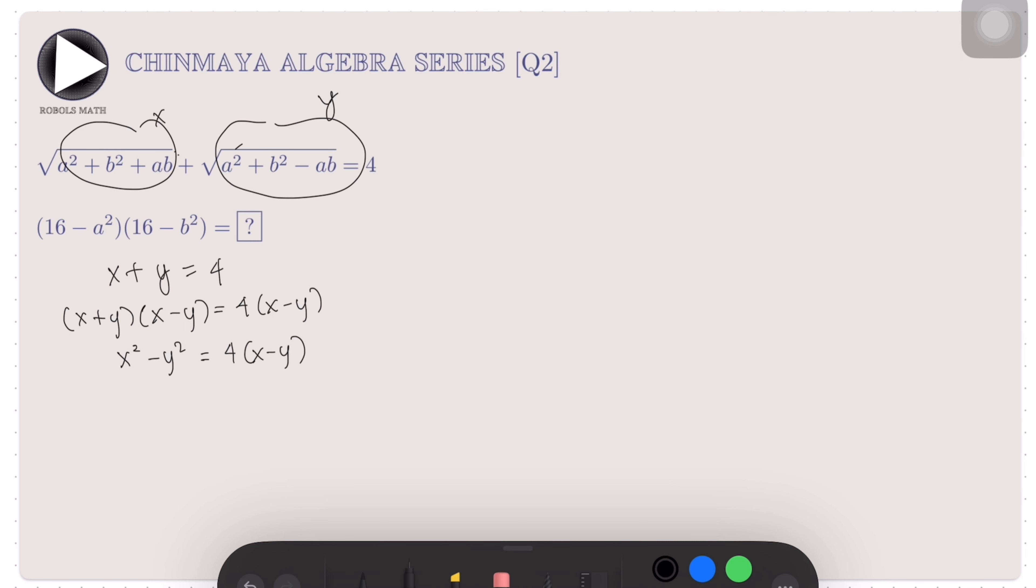Now this x² - y² can actually be expressed as (a² + b² + ab) minus (a² + b² - ab), where we simply remove the radical for each expression. The a² and b² cancel out, leaving us with just 2ab.